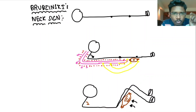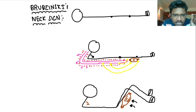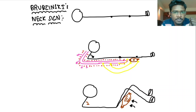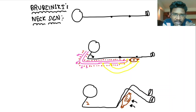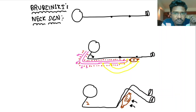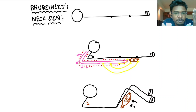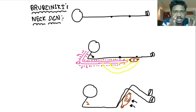Next, Brudzinski's Neck sign. You are just trying to flex the neck of the patient such that the chin touches the chest. At that time, you are again trying to stretch the meninges. So what will the body do? Passively, hip flexion and knee flexion will occur in order to de-stretch the stretched meninges.